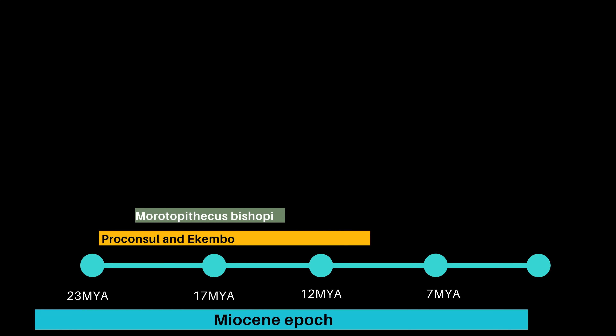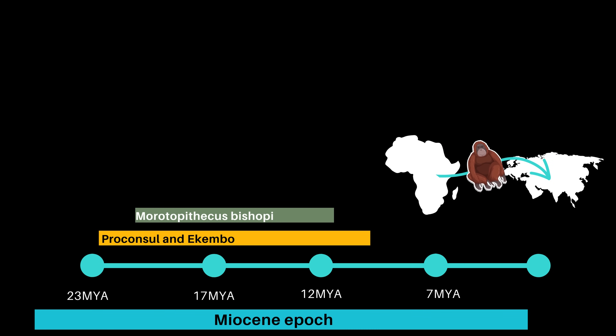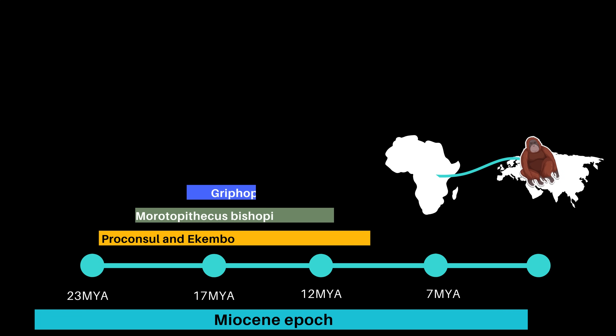Another ape, Morotopithecus bishopi, lived around 20.6 million years ago in Uganda and had anatomy similar to modern apes, suggesting it could swing from branch to branch. Around 17 million years ago, early apes from Africa expanded into Eurasia. These apes, called Gryphopithecus, had teeth adapted for a diet with abrasive foods, indicating a change in diet and habitat from earlier apes.